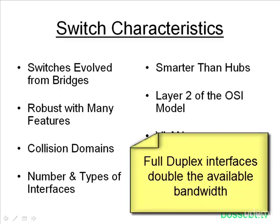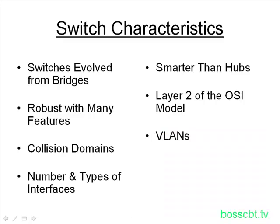You can both send and receive at the same time. Switches are smarter than hubs — switches operate at layer two of the OSI model, whereas hubs are at layer one. A switch does not simply repeat a frame out every interface like a hub does, as you will see in a moment it's a lot smarter. Switches also use something called VLANs, which are a very powerful way to administer a layer two switch network.